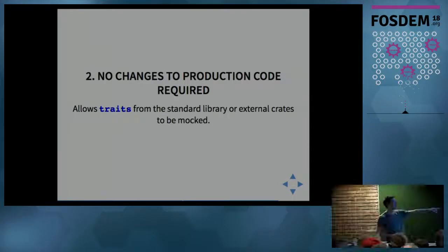The second one was no changes to production code. It's okay to refactor your code to make it more testable, but actually adding extra awkward boilerplate to the code just to make it testable has been a bit icky to me. Also, if you do that, that means you can't just mock any arbitrary traits. You would have to rely on the library developer adding a certain annotation to a trait or structure or function for you to be able to mock it. With this, you can actually mock any arbitrary trait from any library.